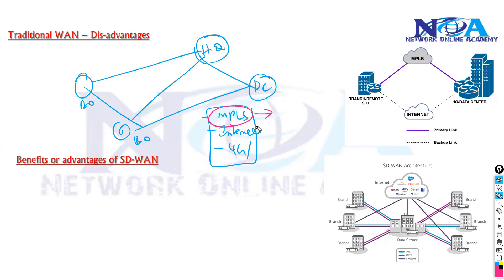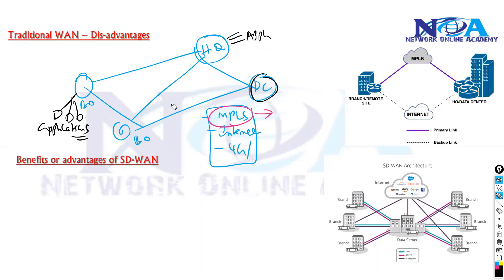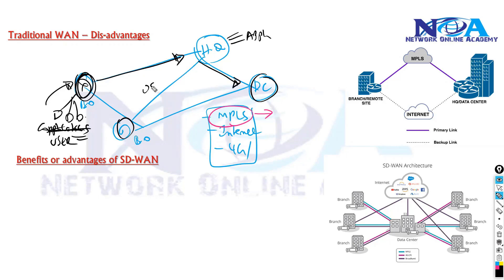Users sitting in the branch offices access applications and resources from the head office, where the centralized database and applications are hosted, or from the data center. When a user tries to access an application, the request goes to the router, which checks the routing table. If you're running OSPF, it calculates the cost, and whichever route has the shortest path, it uses that particular path to forward the packet.